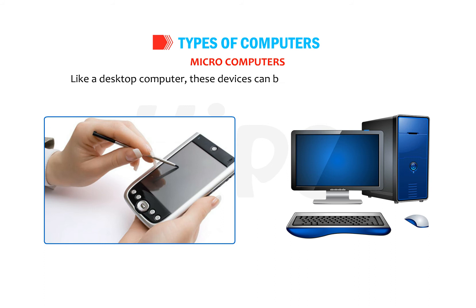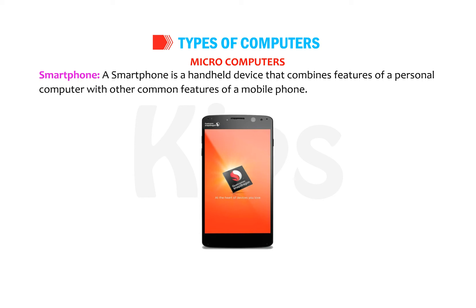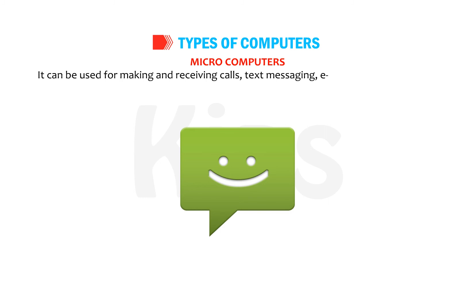Smartphone: a smartphone is a handheld device that combines features of a personal computer with other common features of a mobile phone. It can be used for making and receiving calls, text messaging, emailing, web browsing, capturing and viewing videos, gaming, and much more.